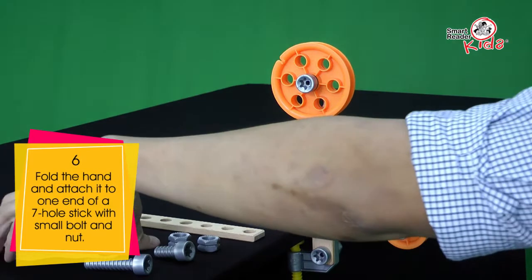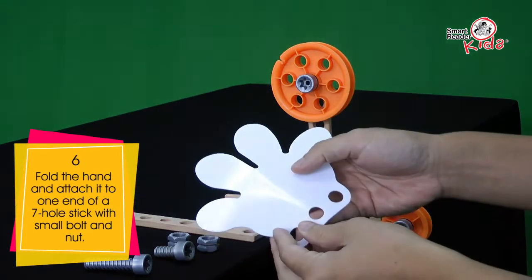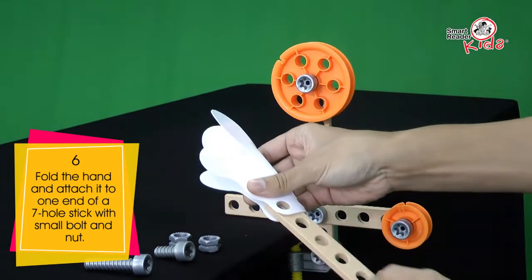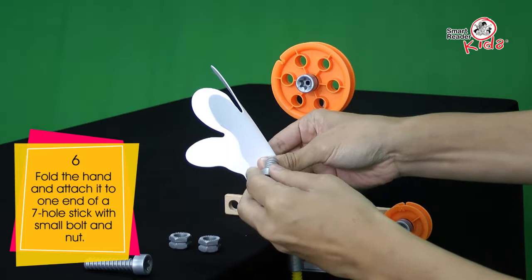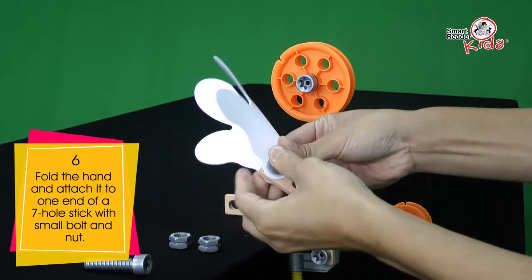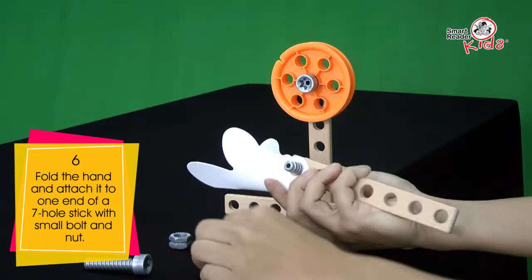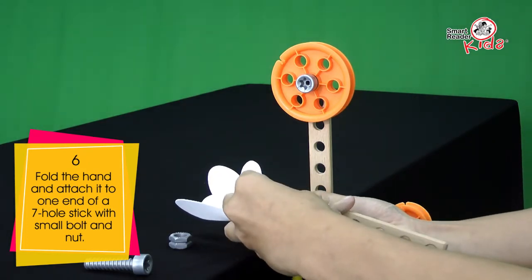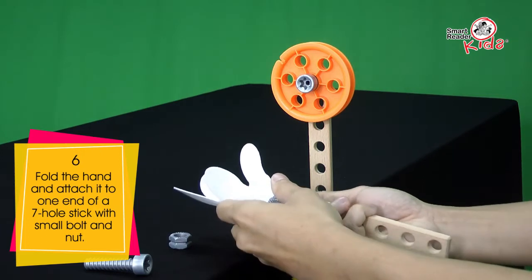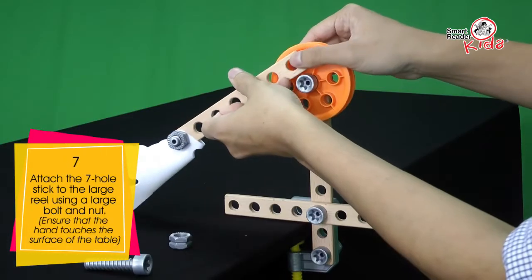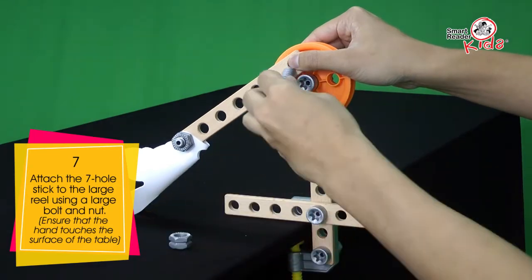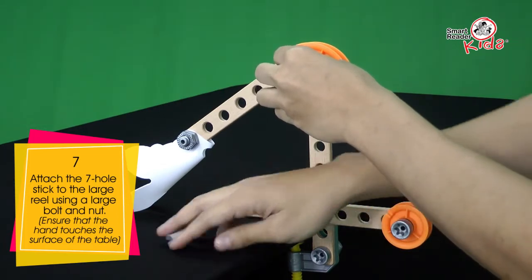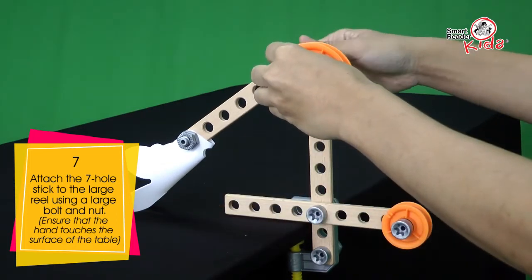Fold the hand and attach it to one end of a 7-hole stick with small bolt and nut. Attach the 7-hole stick to the large reel using a large bolt and nut. Ensure that the hand touches the surface of the table.